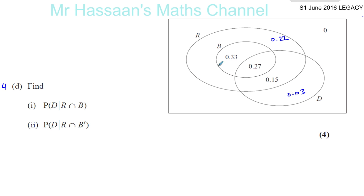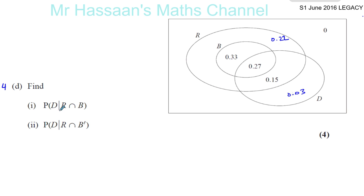Okay, welcome back. This is a continuation of question number four from June 2016, S1, Statistics 1, the legacy papers, not the IA1s. We've done parts A, B, C, and these are the results we got — filled in the missing values in the table and in the Venn diagram. Now we're going to use this to continue this question.